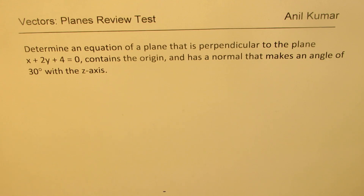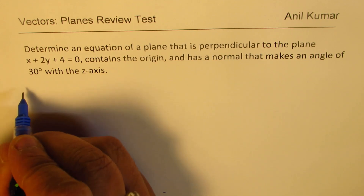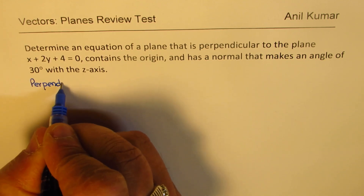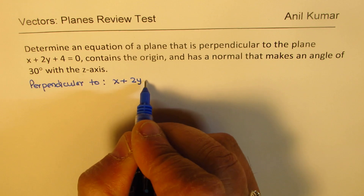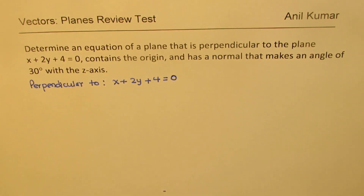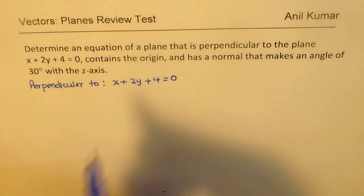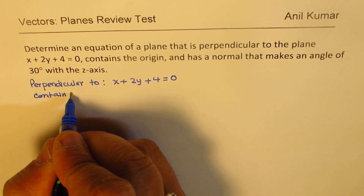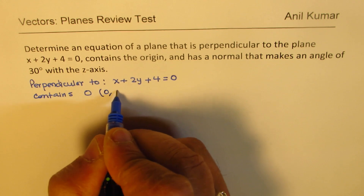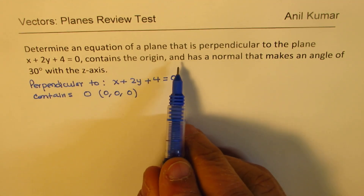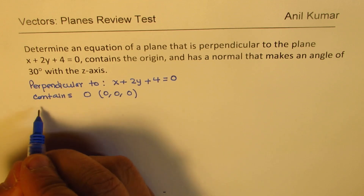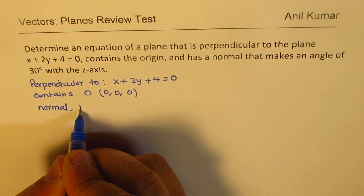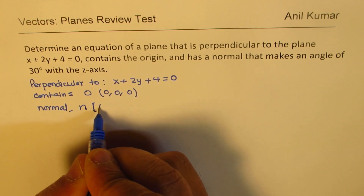In this particular question, we are given three conditions. You need to understand these conditions to answer the question. The first condition is that it is perpendicular to the plane which has equation x plus 2y plus 4 equals to 0. Second, it contains the origin. Third, it has a normal that makes an angle of 30 degrees with the z-axis. So let's say the normal — we'll call it vector a, b, c.